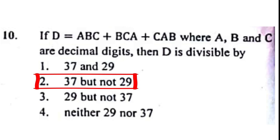Problem number 10: If D equals ABC plus BCA plus CAB, where A, B and C are decimal digits, then D is divisible by? The correct answer to this problem is option 2, that is D is divisible by 37 but not 29.